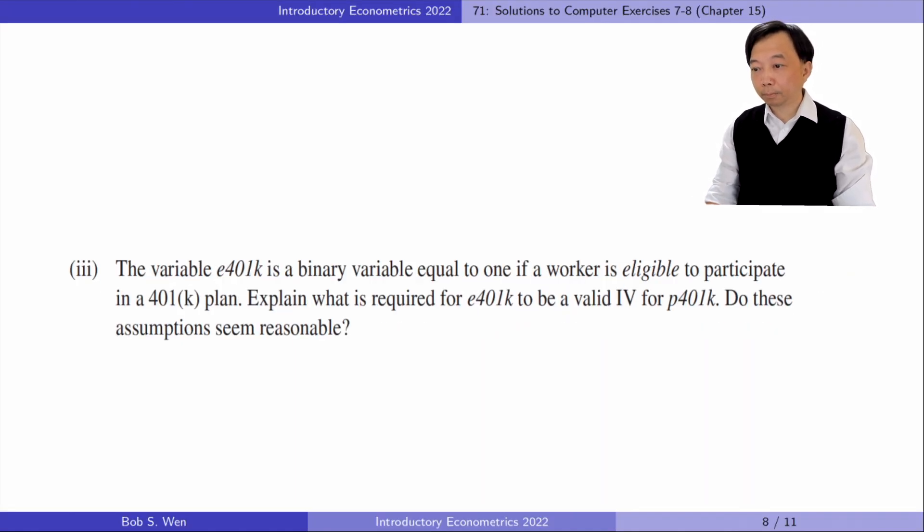In part 3, the variable E401k is a binary variable equal to 1 if a worker is eligible to participate in a 401k plan. Explain what is required for E401k to be a valid IV for P401k. Do these assumptions seem reasonable? For E401k to be a valid instrumental variable for P401k, it must satisfy the instrument relevance requirement and the instrument exogeneity requirement. The latter is also called the exclusion restriction condition.